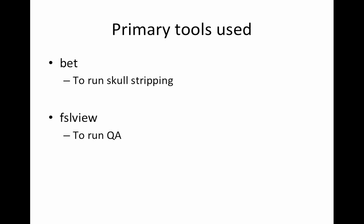But we'll get there — let's just worry about removing the skull and the eyeballs today. The primary tools you'll use are BET, the Brain Extraction Tool of FSL, and FSLview to run the QA. I highly recommend that for a couple of subjects you play around and find the BET settings that work really well. If you're using the same image acquisition for all your structurals, it should work pretty well for most of your subjects.